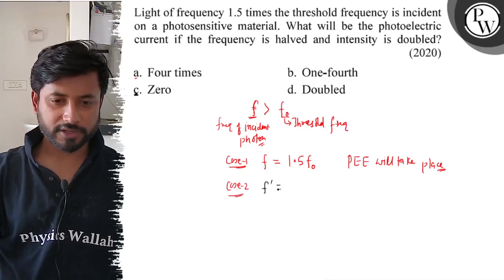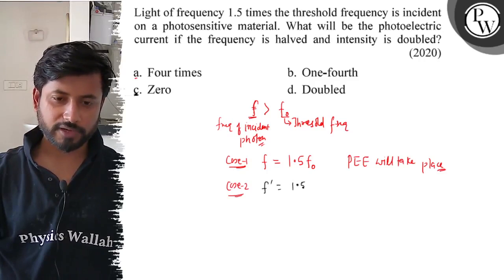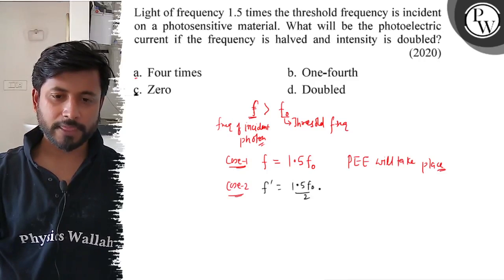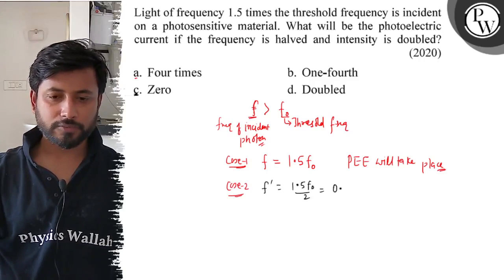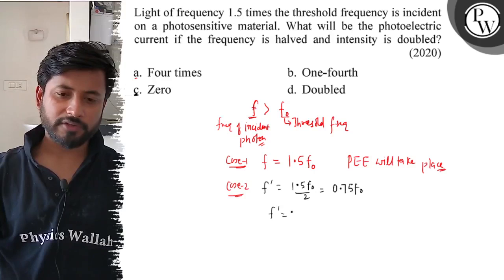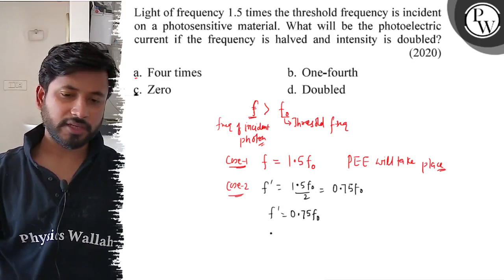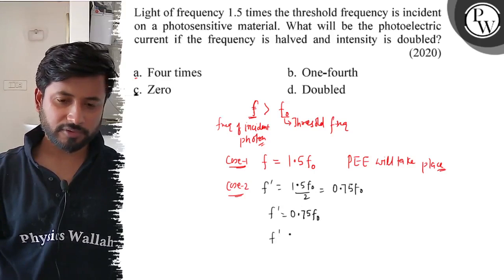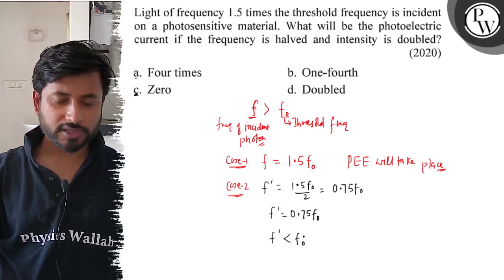If the frequency is halved, that is 1.5 F0 by 2, which equals 0.75 F0. The new frequency is 0.75 F0, which is less than the threshold frequency.